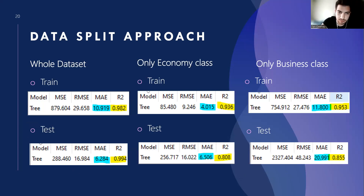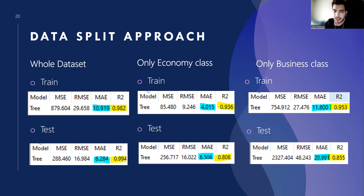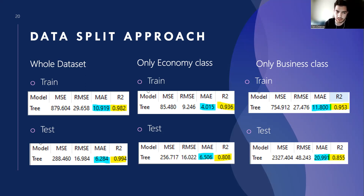We compared the test and training results by dividing the data into three parts: the whole dataset, only economy, and only business. Although training yielded lower MAE results in the economy-only part, R-squared values dropped drastically, and overfitting occurred because we got worse test error values. As a result, we decided to use the whole dataset, not the separated one.